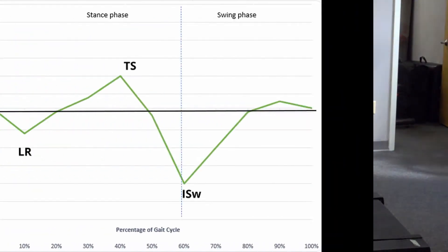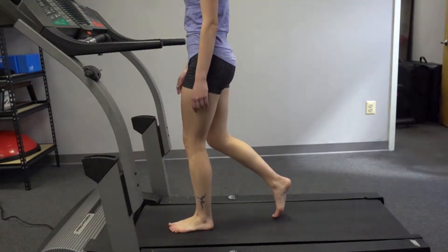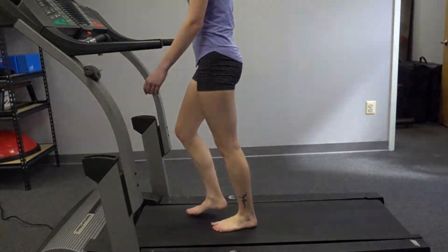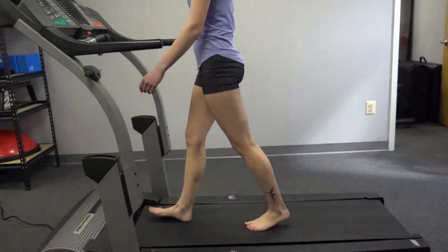At the ankle, we're interested in dorsiflexion and plantarflexion. Plantarflexion is represented below the horizontal line, while dorsiflexion is above. As you can see from the graph, we have two periods each of plantarflexion and dorsiflexion throughout the gait cycle. The amount of motion necessary at the ankle for normal gait ranges from about 10 degrees of dorsiflexion to approximately 20 degrees of plantarflexion.